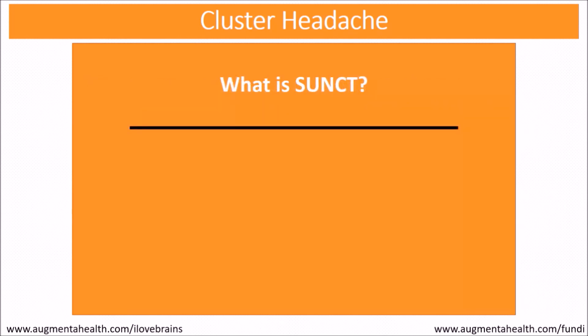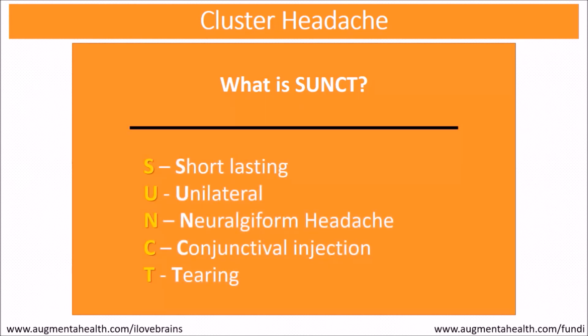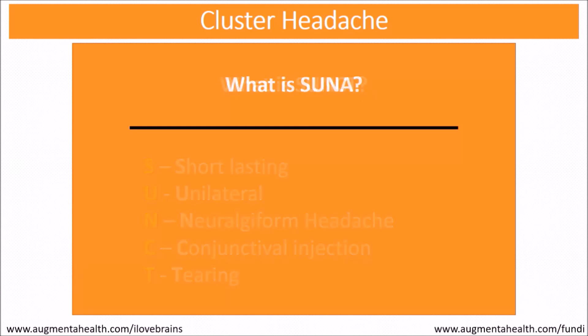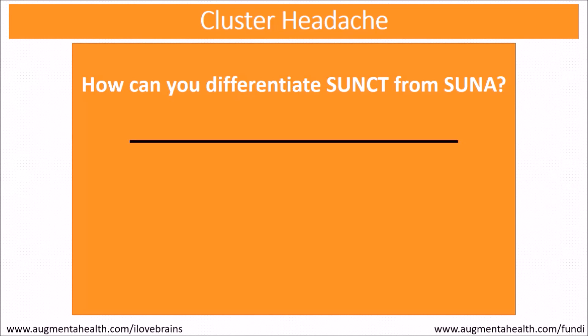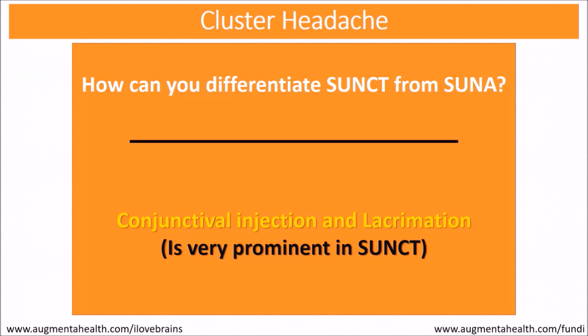SUNCT stands for Short-lasting, Unilateral, Neuralgiform headache with Conjunctival injection and Tearing. SUNA stands for Short-lasting, Unilateral, Neuralgiform headache with cranial Autonomic symptoms. The key difference between SUNCT and SUNA is that conjunctival injection and lacrimation are very prominent in SUNCT, as represented by the C and T in the acronym.